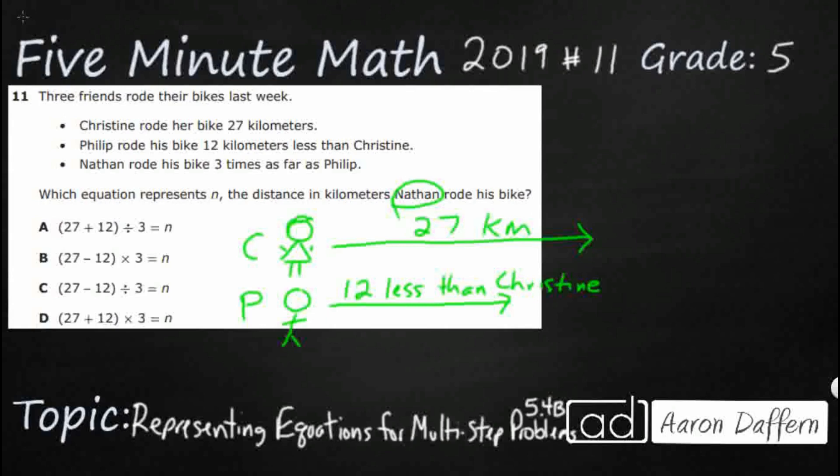And then Nathan rode his bike three times as far as Phillip. Wow. All right. So here is Nathan. He is also going to be a little stick person.